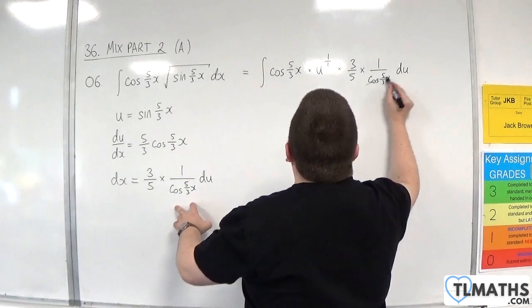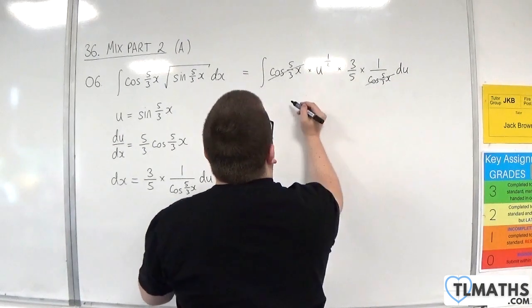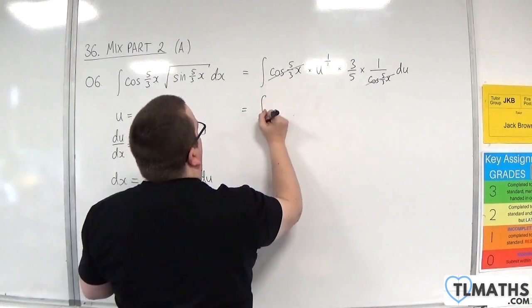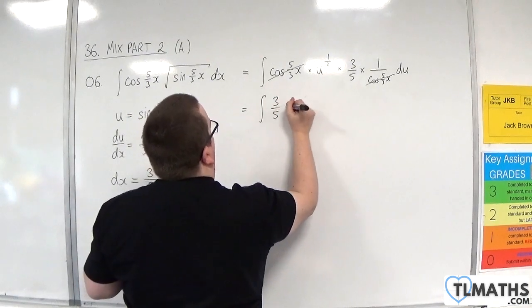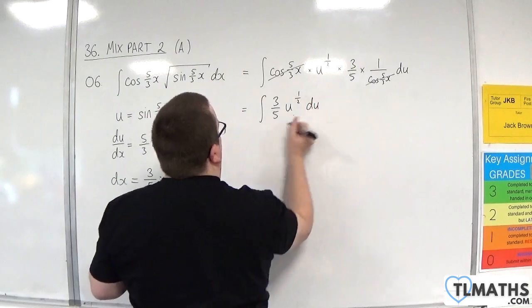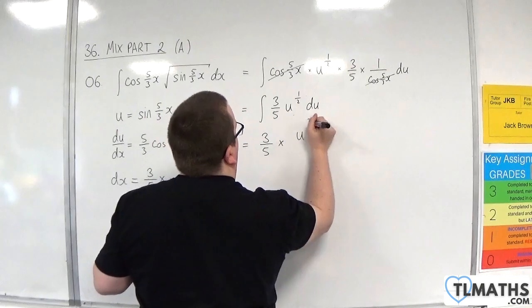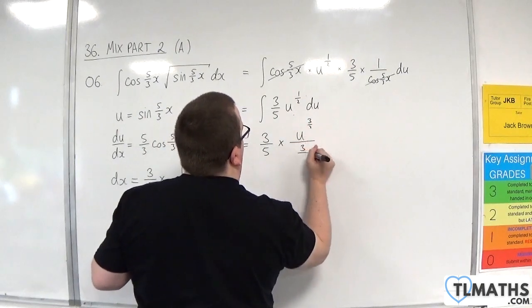Now the cosine 5 thirds x cancel. So we've got now the integral of 3 fifths u to the half du. So I want to add 1 to the power and divide by the new power.